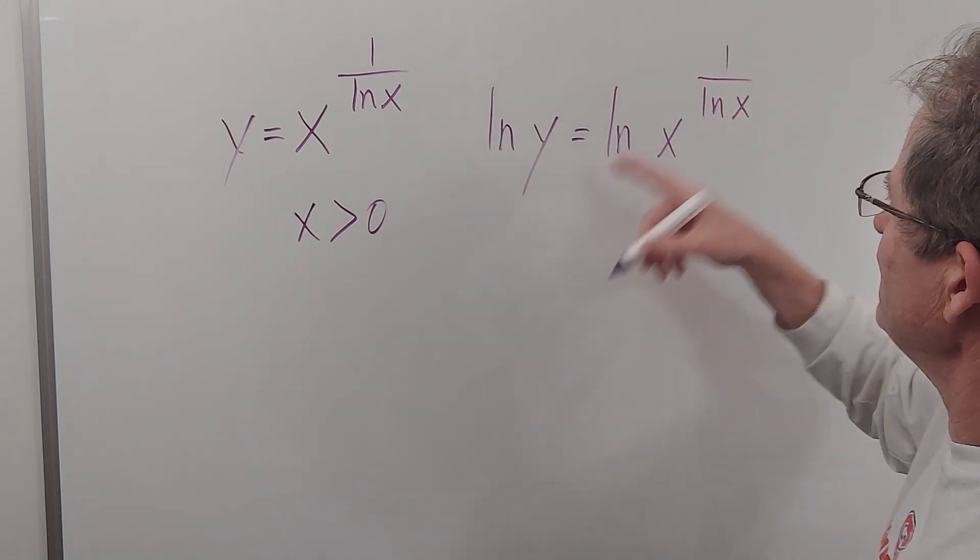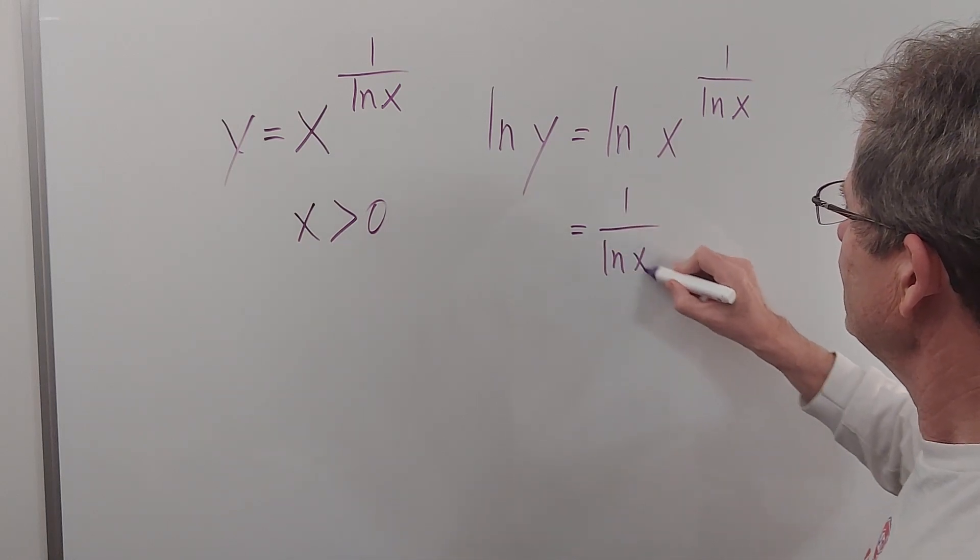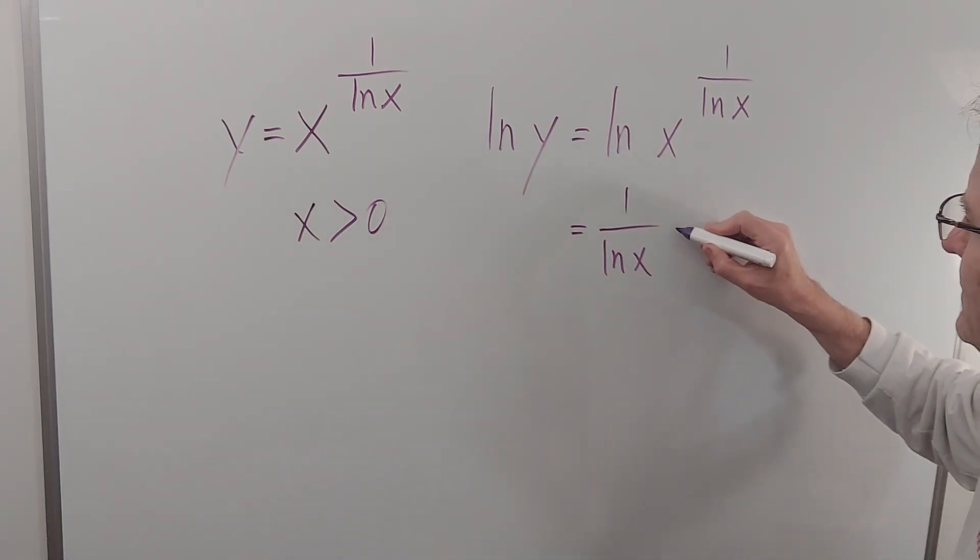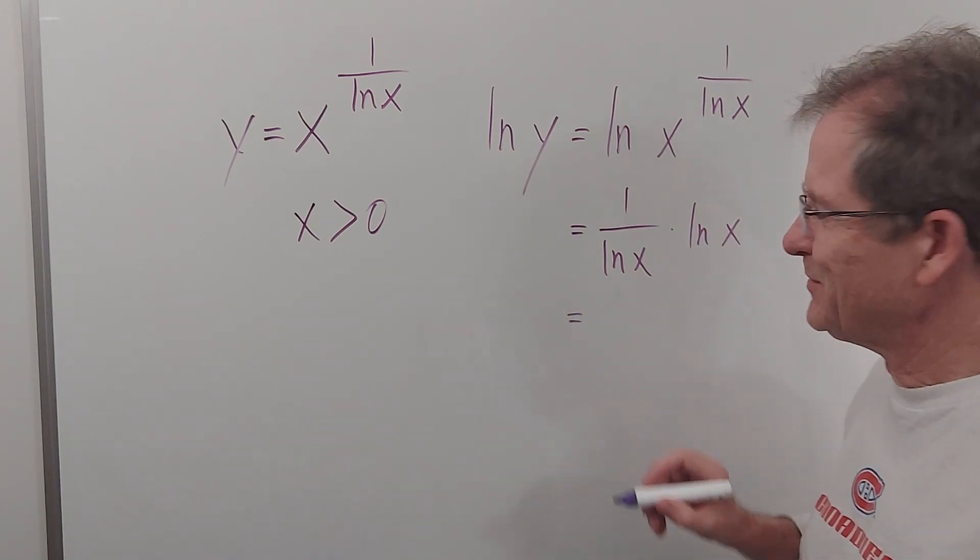which means the exponent comes to the front. So this is 1 over ln x, and we're left with ln x, which very nicely simplifies to 1.